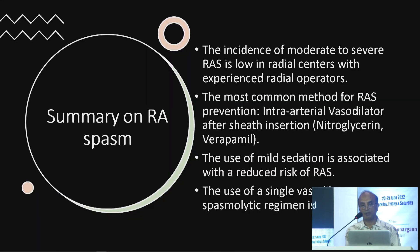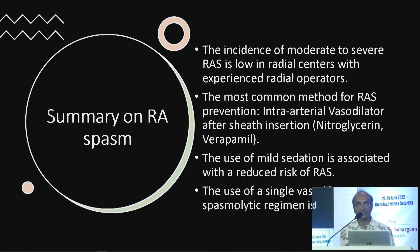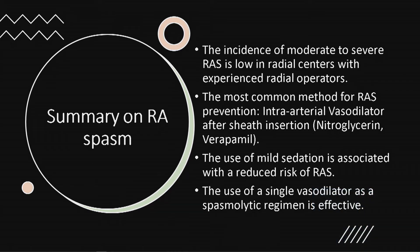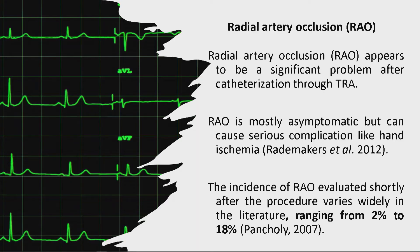Summary of radial artery spasm: the incidence of moderate to severe radial artery spasm is low in experienced radial centers. The most common prevention method is intra-arterial vasodilator cocktail. The use of mild sedation is associated with reduced risk of radial artery spasm, and a single vasodilator may be used.